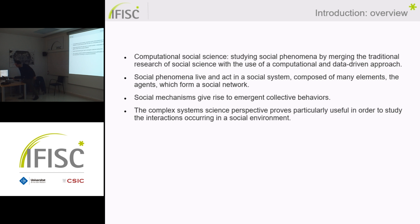Computational social science is a quite recent interdisciplinary field of study, aimed at merging the traditional studies in social science and social phenomenon interactions with the inclusion of a data-driven and computational approach. In particular, a complex system perspective is very useful in studying social phenomena, because social systems can be considered as complex systems formed of many agents interacting and giving rise to emerging behavior at a system level.